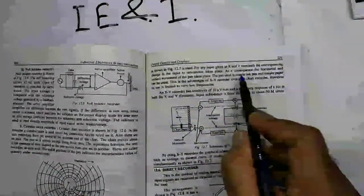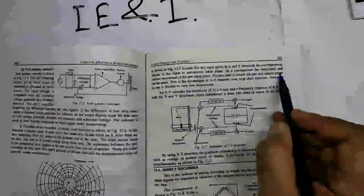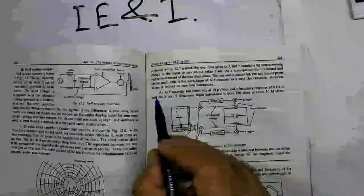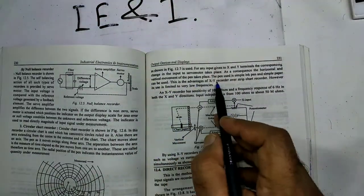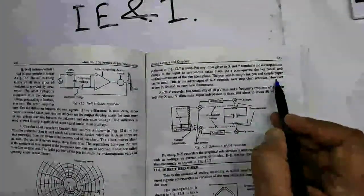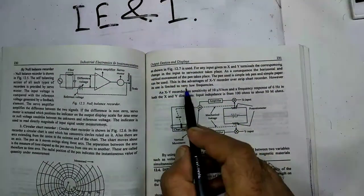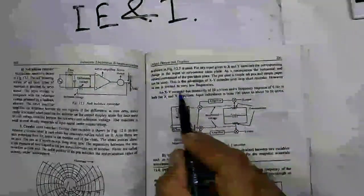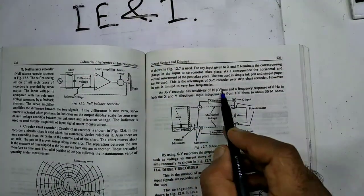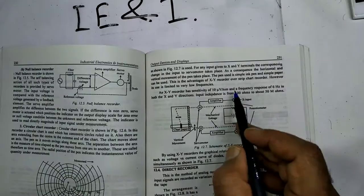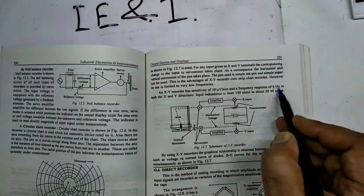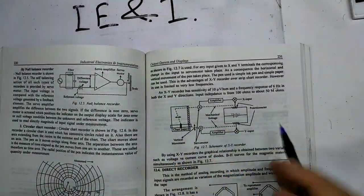As a consequence, the horizontal and vertical movement of the pen takes place. The pen used is simple ink pen and simple paper can be used. This is advantage of XY recorder over strip chart recorder. However, its use is limited to very low frequencies. XY recorder has sensitivity of 10 microvolts per millimeter and a frequency response of 6 hertz in both X and Y direction.